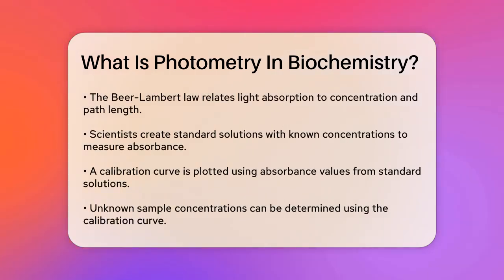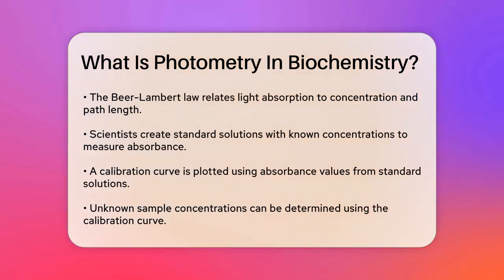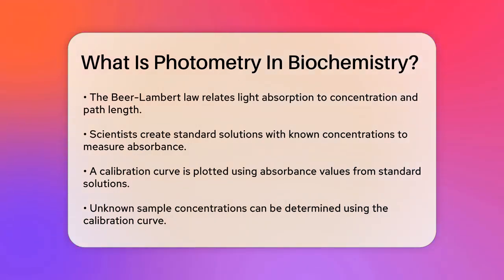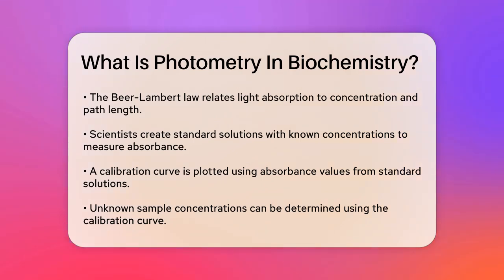The key principle here is the Beer-Lambert law, which states that the amount of light absorbed by a substance is directly proportional to the concentration of that substance and the length of the light path through the solution. This law is represented by a simple formula that relates absorbance to concentration and path length.